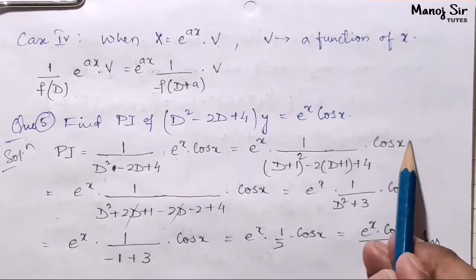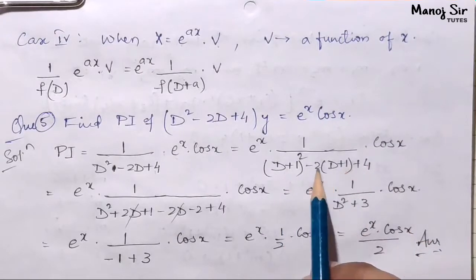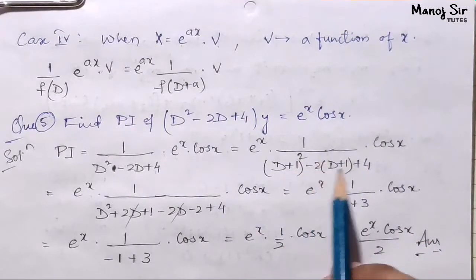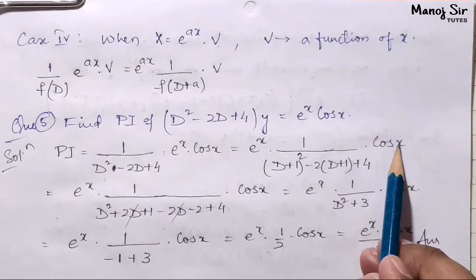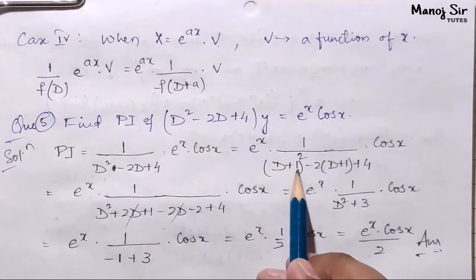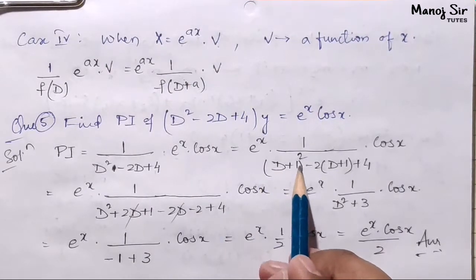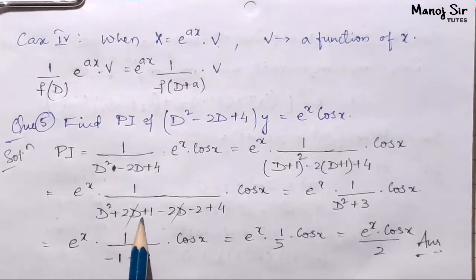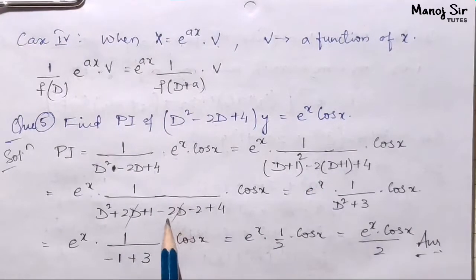We solve for cos x using case number 2. Expanding (D+1)² gives D² + 2D + 1. Opening the bracket: -2D - 2, and +4 remains. This gives (D² + 2D + 1 - 2D - 2 + 4) cos x.